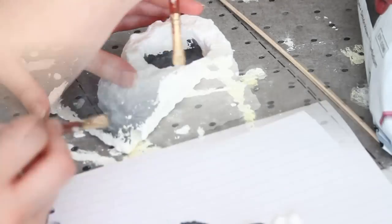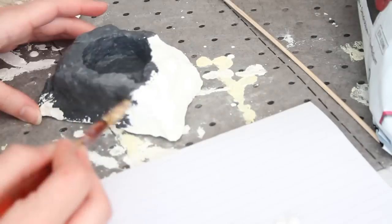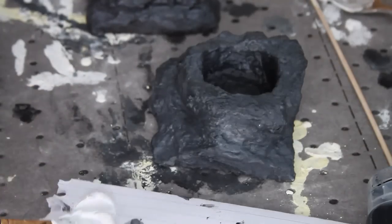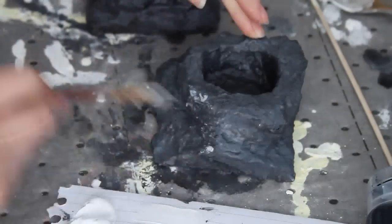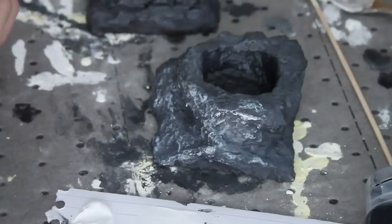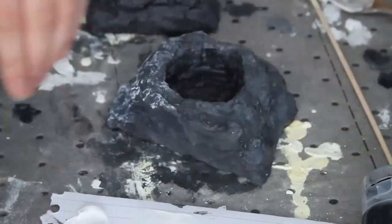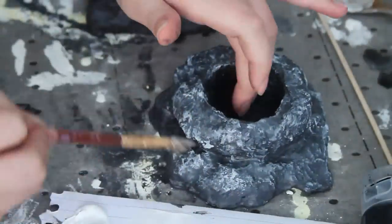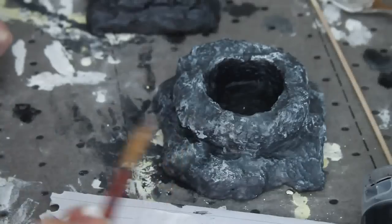Now I'm going to do a dry brush technique. This is really simple: basically you get some paint on your brush, then dry it out as much as possible in a bit of kitchen roll, and then briskly brush it across the dish. As you can see, this highlights the texture a lot and helps with the overall rocky look.